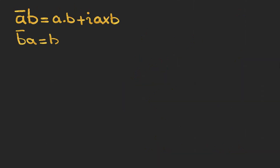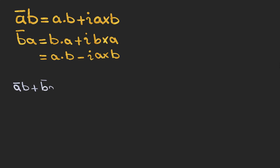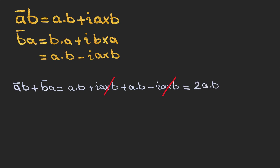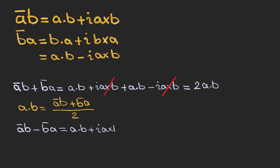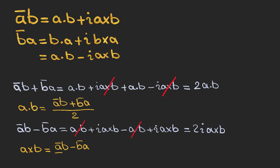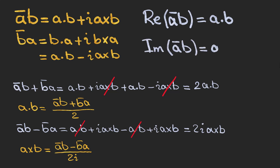Let's find b̄·a, which equals b dot a plus i times b cross a. As you can see, the real part stays the same but the imaginary part has a minus sign. So b̄·a is the complex conjugate of ā·b. If we add these two complex numbers, the imaginary terms cancel and we are left with 2 times a dot b — so the real part of ā·b is a dot b. If we subtract them, the real parts cancel and we are left with 2i times a cross b — so the imaginary part of ā·b is a cross b.